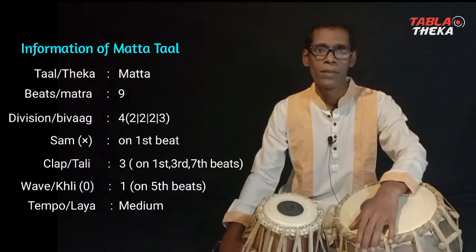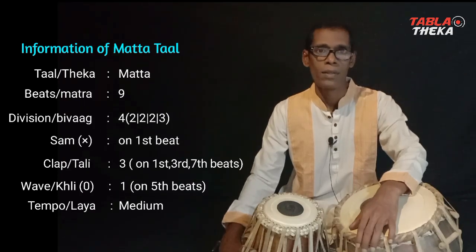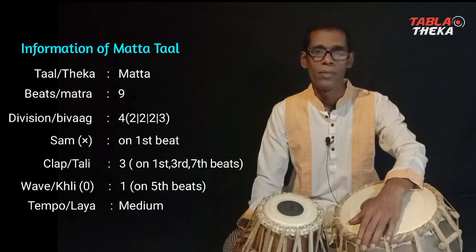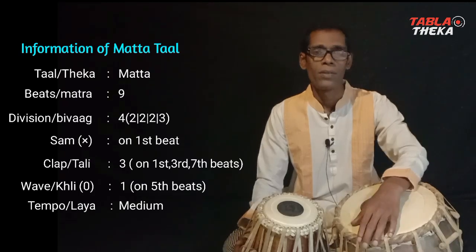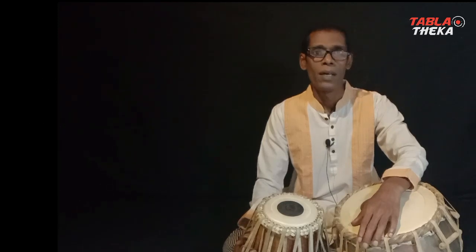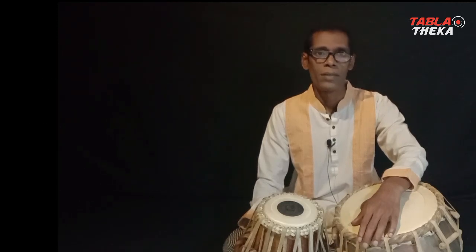Mottotal has 9 beats. It has 4 divisions of 2, 2, 2, and 3 beats. There are 3 claps of this rhythm on the 1st, 3rd, and 7th beats, and 1 wave on the 5th beat. The first beat of the rhythm is called Shom, which places the 1st clap. But there are differences of opinion about the beats, divisions, claps, and waves of this rhythm.